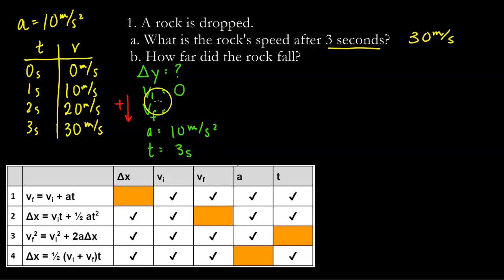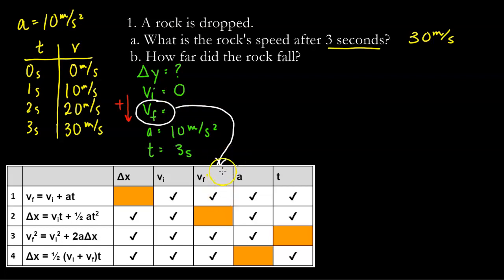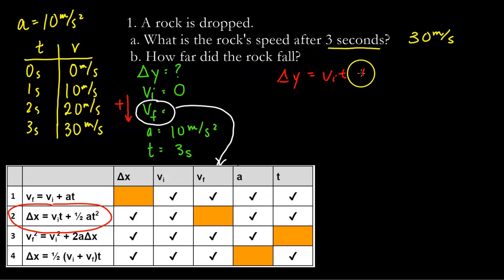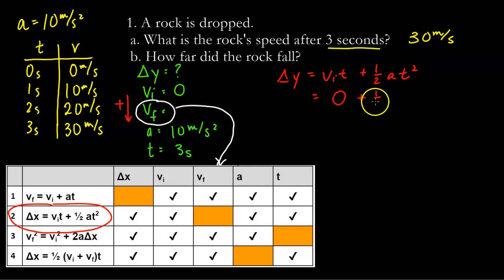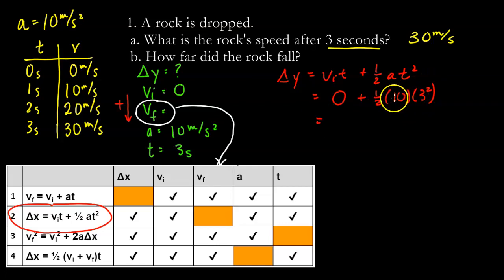Looking at my chart, I want the equation that doesn't have vf — that's the second one: delta x equals vi*t plus 1/2 at squared. Since we're working on the y-axis I'll write it as delta y equals vi*t plus 1/2 at squared. Vi is 0 so that term is zero, plus 1/2 times 10 meters per second squared times 3 seconds squared. Three squared is 9, and 10 divided by 2 is 5, so 9 times 5 gives us 45 meters. This rock after 3 seconds will fall 45 meters.